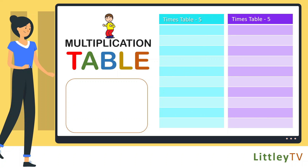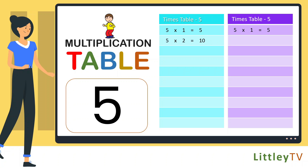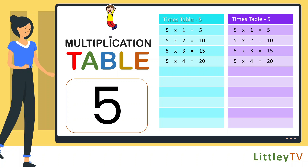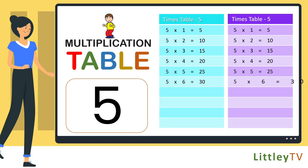Table of 5. 5 ones are 5, 5 twos are 10, 5 threes are 15, 5 fours are 20, 5 fives are 25, 5 sixes are 30, 5 sevens are 35.